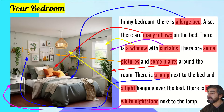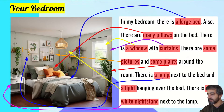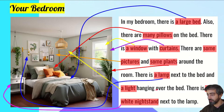Let's see: there are many pillows on the bed. There are pictures and plants around the room. There is a lamp next to the bed. And there is a white nightstand next to the lamp. There is a light hanging over the bed.